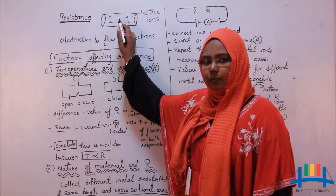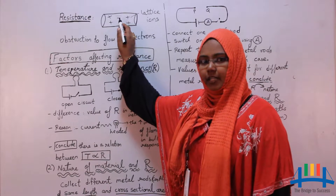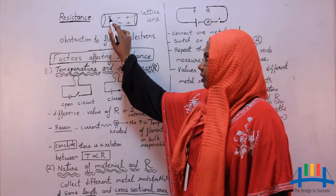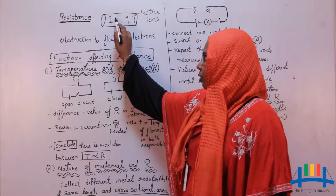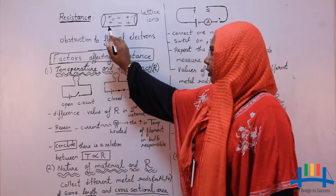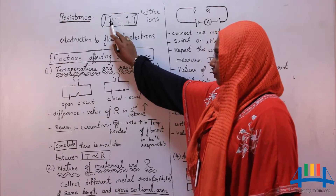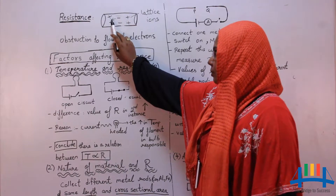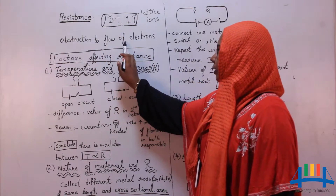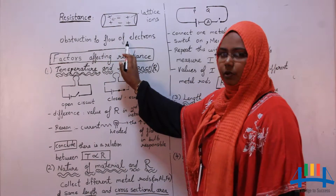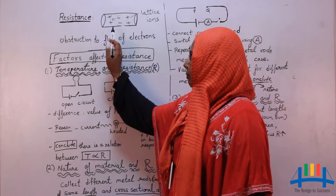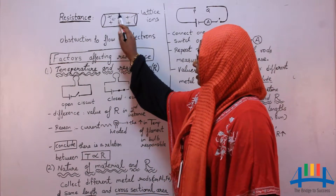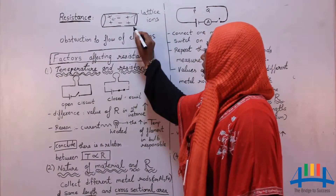This movement of negative ions is what we call as current. When negative ions are in motion, they come to a halt — they stop due to the presence of positive ions in the middle. So this obstruction to the flow of electrons is called resistance, and the material which offers the resistance is called a resistor.